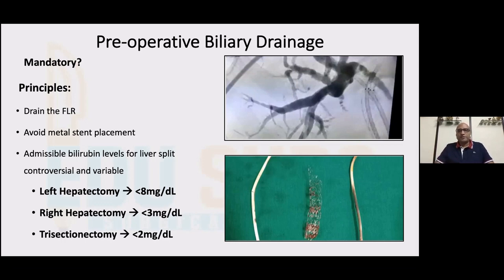We certainly avoid metal stent placement. In one case, ERCP with two metal stents and plastic stents led to patient returning in cholangitis despite stenting, and we had to do a PTBD on the FLR side to relieve the jaundice as well as the cholangitis.